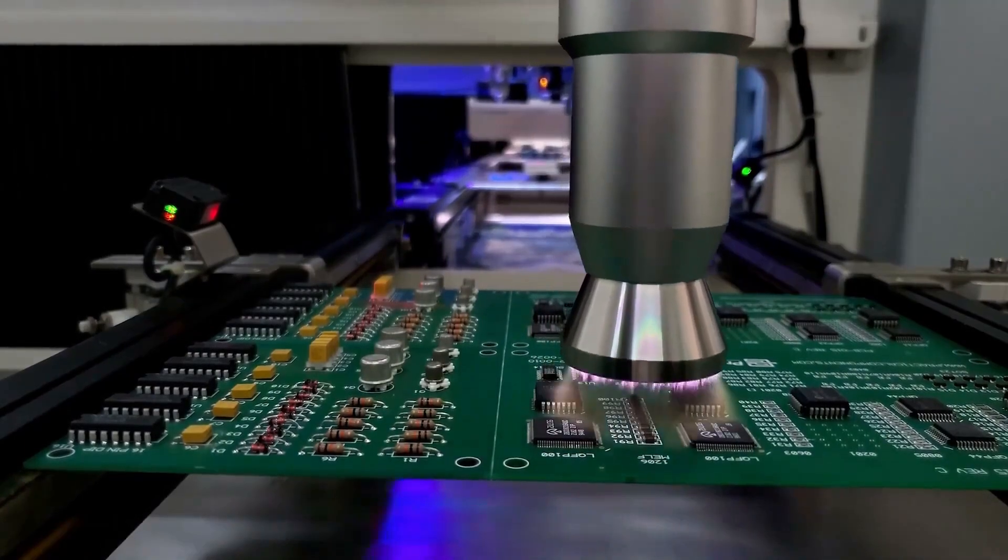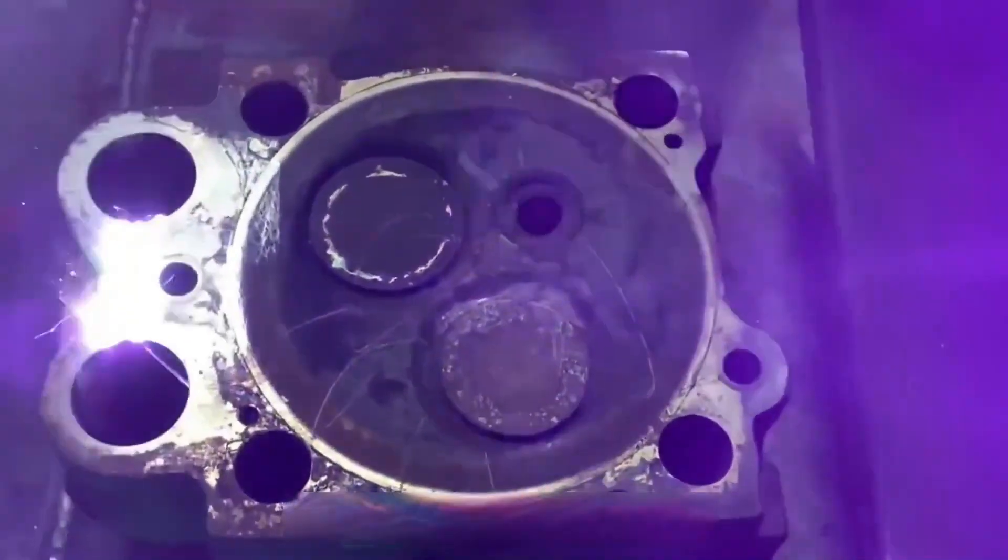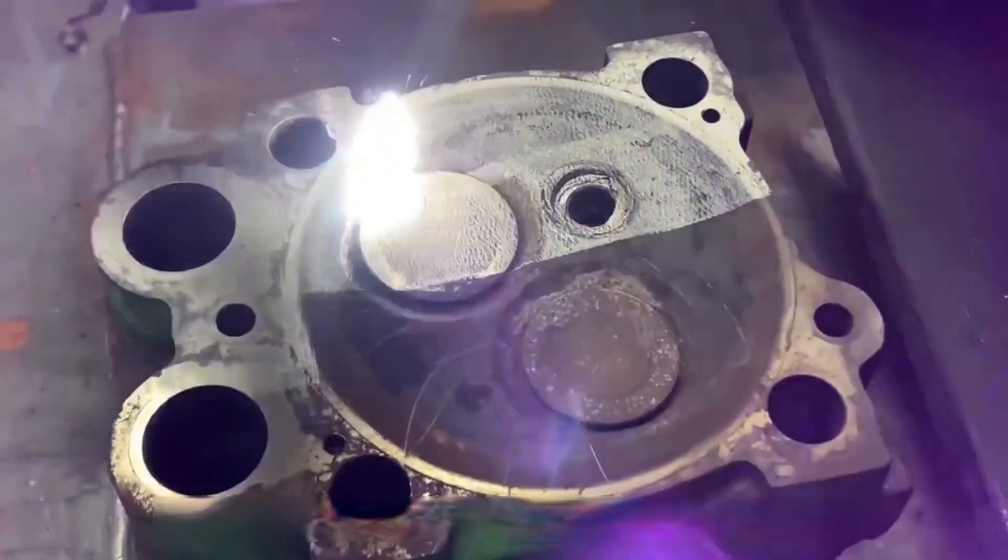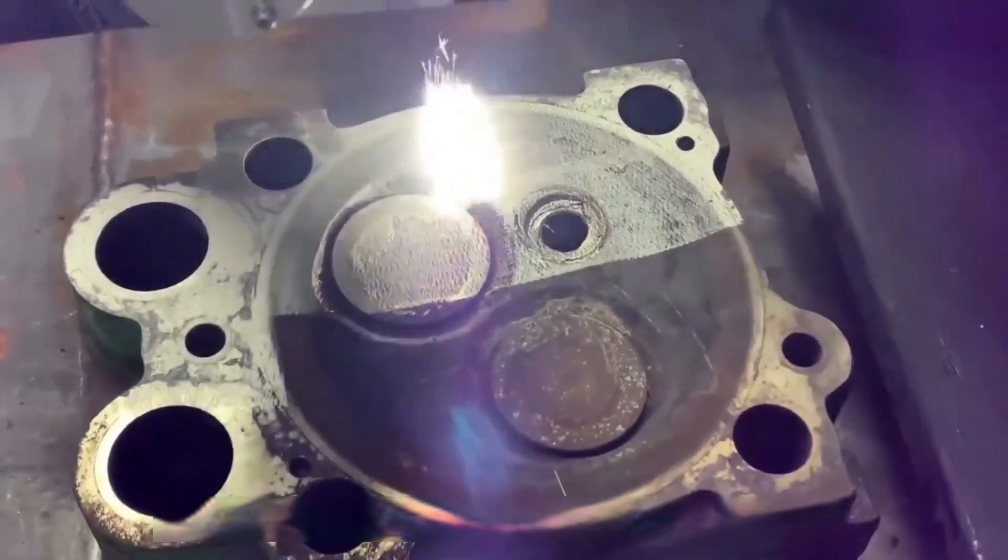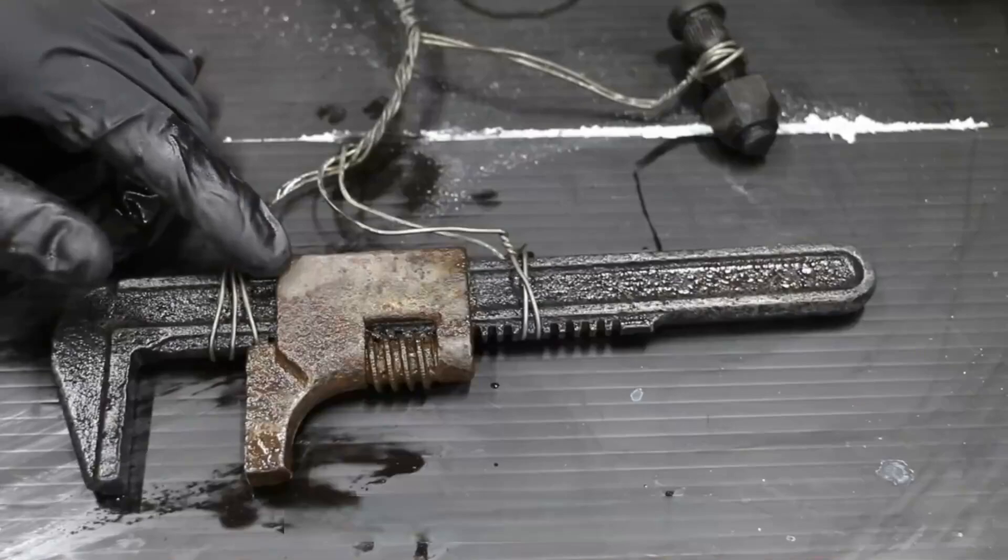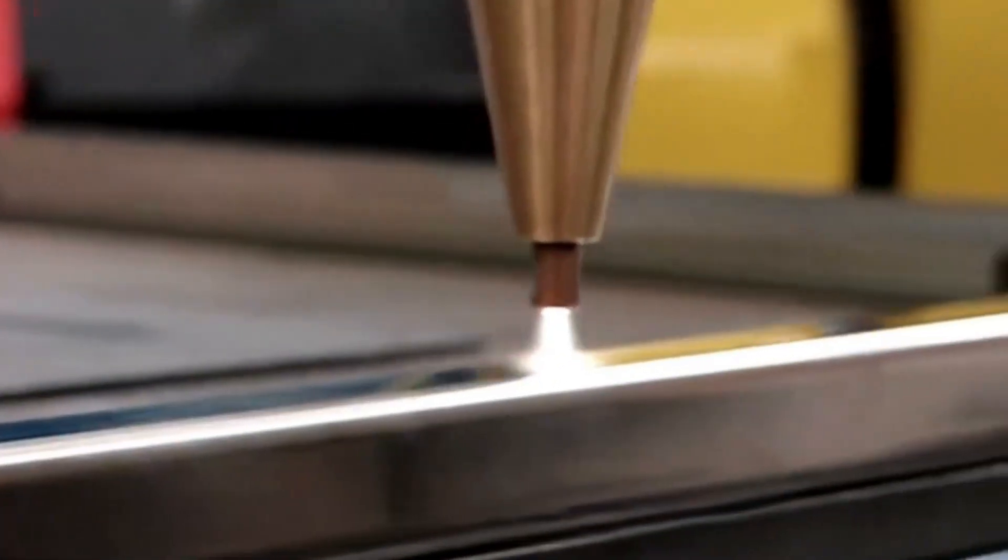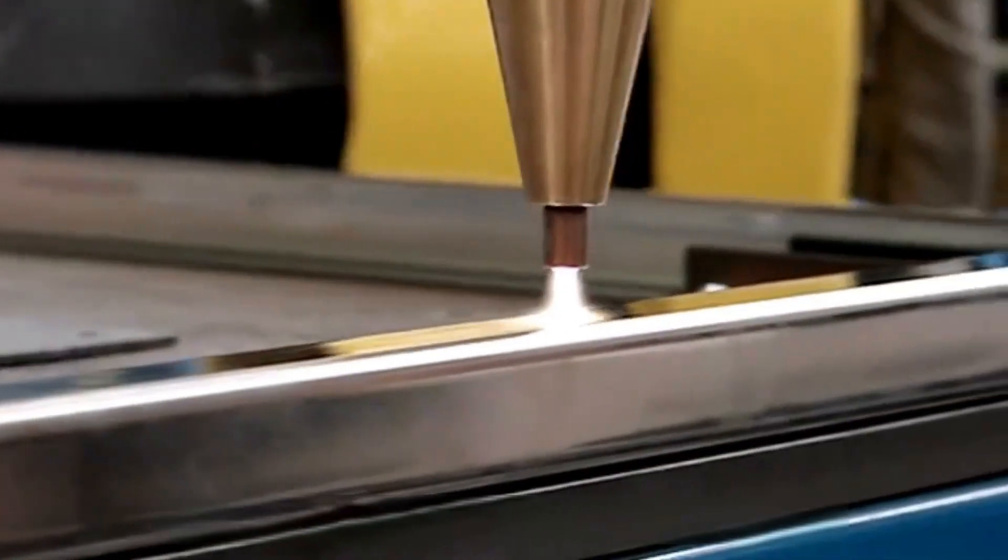Some components during the manufacturing process need to be cleaned to remove surface contaminants. Although there are many cleaning methods that can be used, some may cause damage to parts or incomplete cleaning. These problems can be avoided by using plasma cleaning.